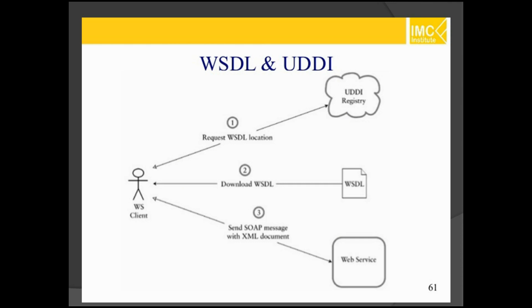How it will work with WSDL and UDDI: in web services, a client requests something. Based on the request, the UDDI registry sends the relevant information. Then, whatever information you want to get, you can download it from the WSDL files. After downloading, you will get SOAP messages in the specified format as an XML document.